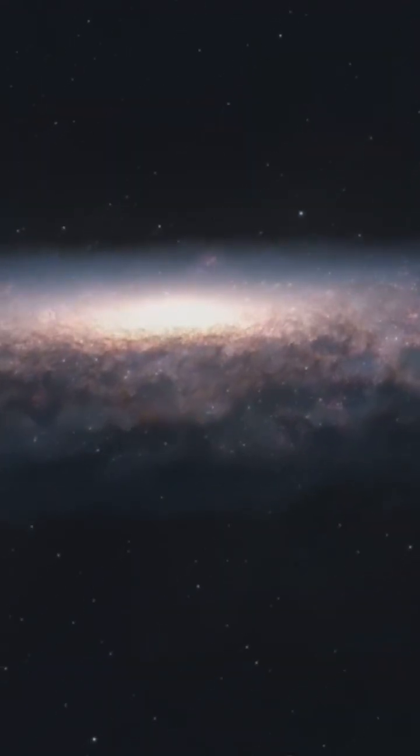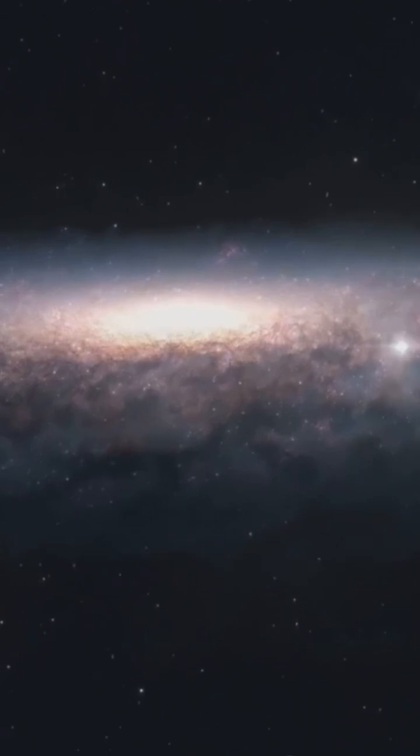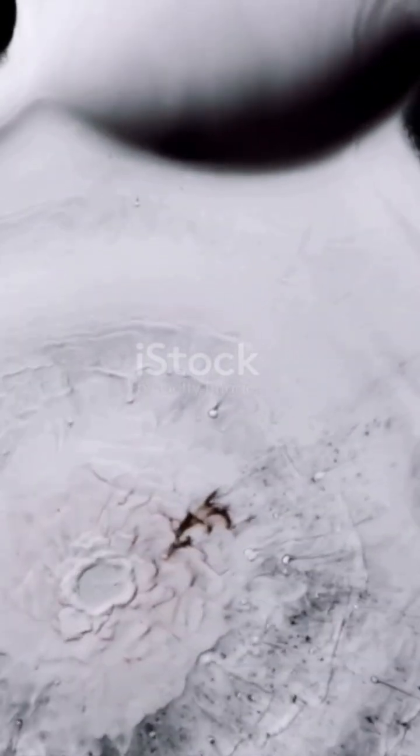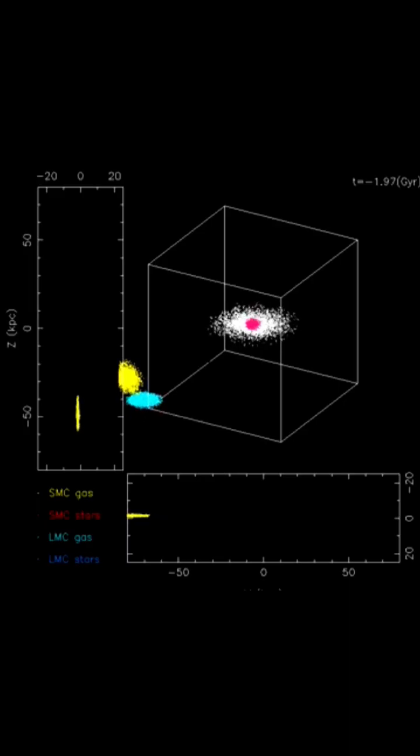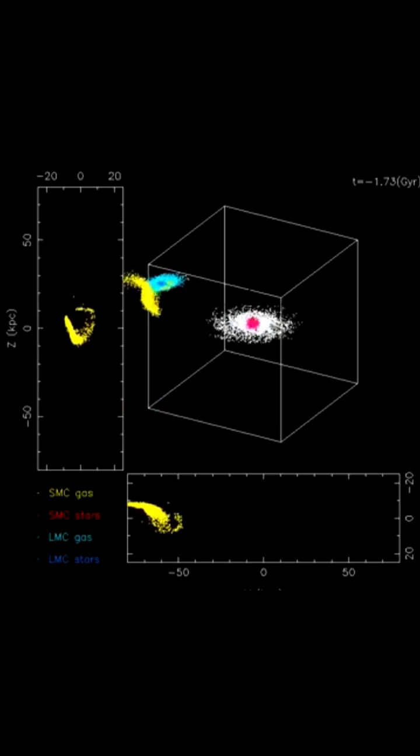Named the Magellanic Stream, this bridge was once thought to be just cosmic leftovers, but the latest data from radio telescopes reveals something shocking: it's twisting, growing, and possibly feeding our galaxy with fresh star-forming material, meaning new stars and solar systems might be born from this massive cosmic lifeline.